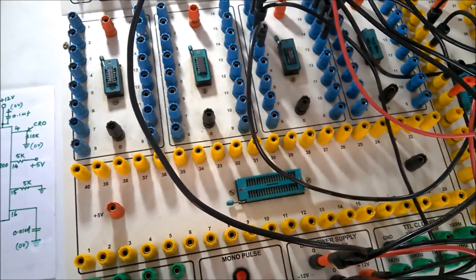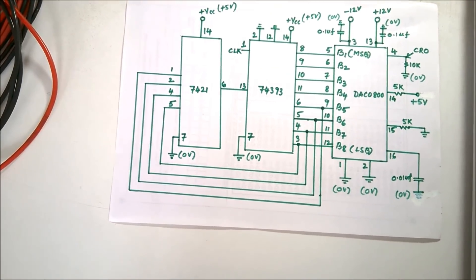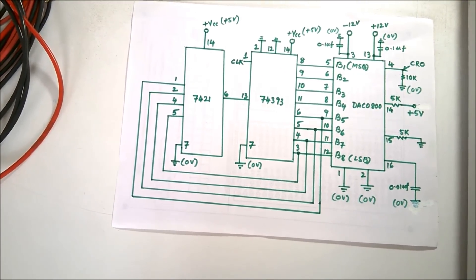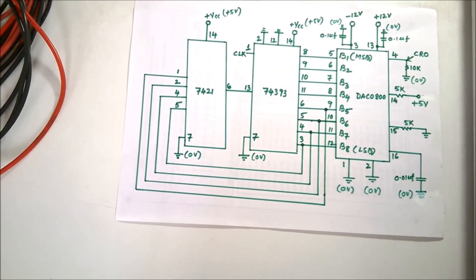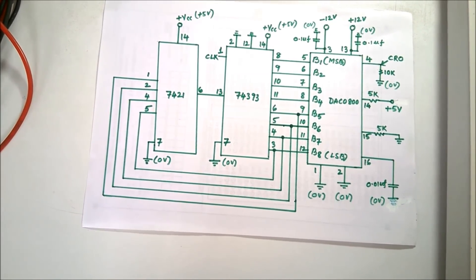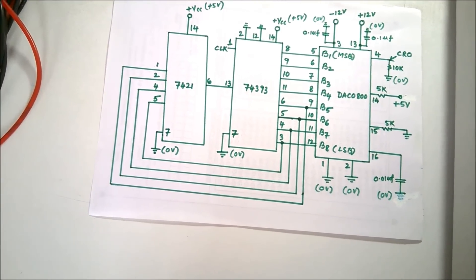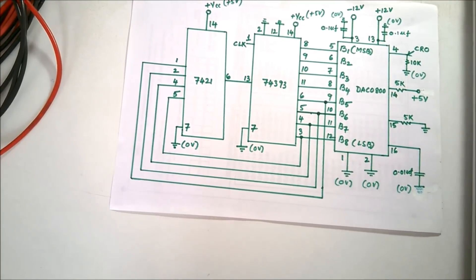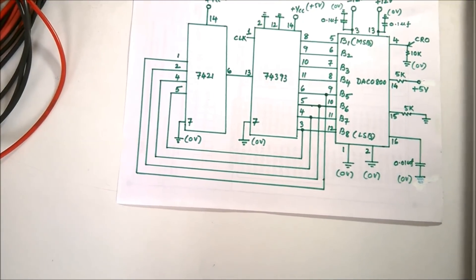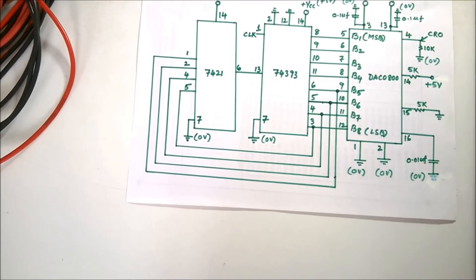Now I connect the 74393, which is a 14-pin IC. Pin 7 is grounded, pin 14 is VCC, and the two reset pins — pins 2 and 12 — are grounded. The first counter outputs (pins 3,4,5,6) and second counter outputs (pins 8,9,10,11) are connected to the DAC0800, with pin 8 as the most significant bit down to the least significant bit.